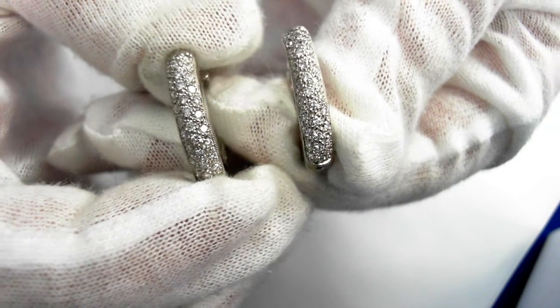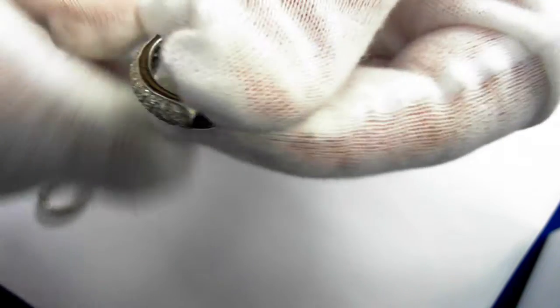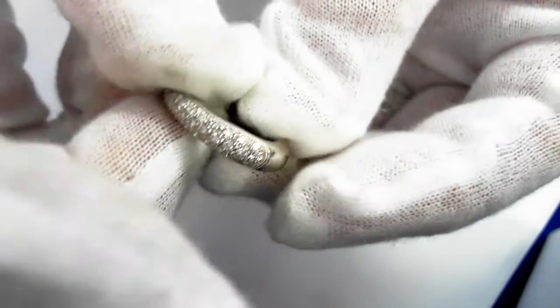Here we have some beautiful pave diamond hoop earrings. Let's take a look at this one right here. They are 14 carat white gold, and the total weight is 1.60 carats.